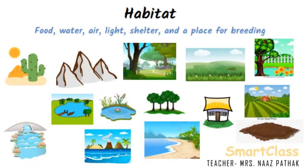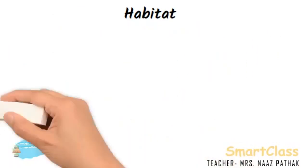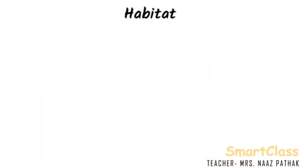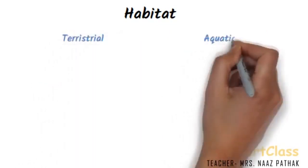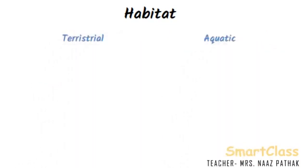A plant or animal is adapted to survive in its habitat. The habitats can be divided into two main groups: terrestrial habitat and aquatic habitat.